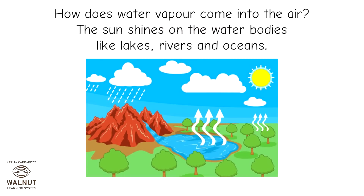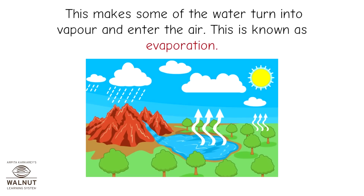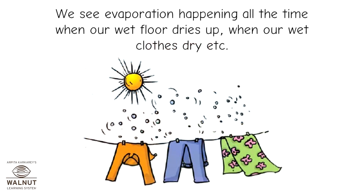How does water vapor come into the air? The sun shines on water bodies like lakes, rivers and oceans. This makes some of the water turn into vapor and enter the air. This is known as evaporation. We see evaporation happening all the time when our wet floor dries up, when our wet clothes dry, etc.